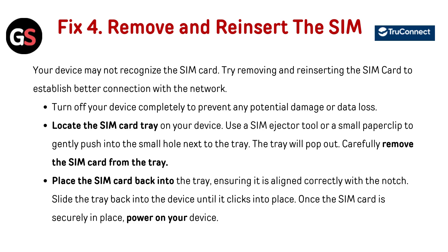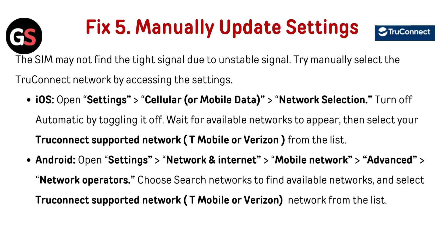Fix 4: Remove and reinsert the SIM. Your device may not recognize the SIM card — try removing and reinserting it to establish a better connection with the network. Turn off your device completely to prevent any potential damage or data loss. Locate the SIM card tray, use a SIM ejector tool or small paper clip to gently push into the small hole next to the tray. The tray will pop out — carefully remove the SIM card, place it back aligned correctly with the notch, slide the tray back until it clicks, then power on your device.